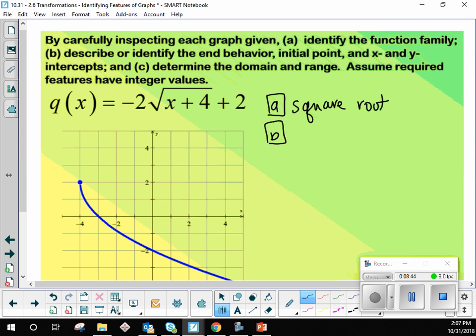So we said this function family was square root, and then B, describe or identify the end behavior. What's the left end behavior? It does not exist, right? Okay, so DNE for the left and the right end down. This asks for an initial point because it doesn't have a vertex. The initial point, what are the coordinates for the initial point? Negative 4, 2 with parentheses and a comma, the whole treatment.